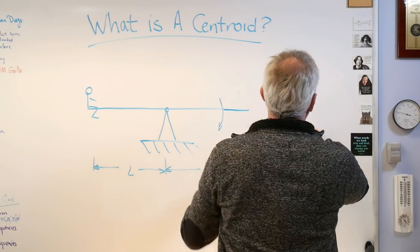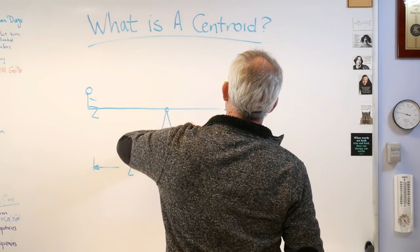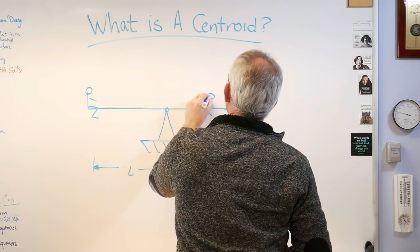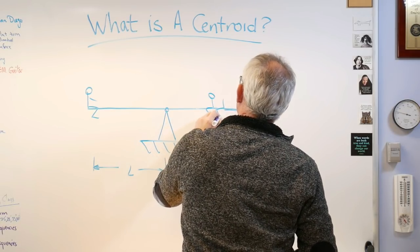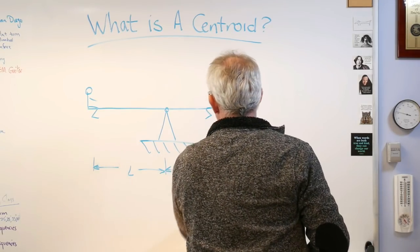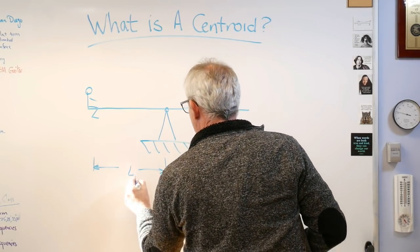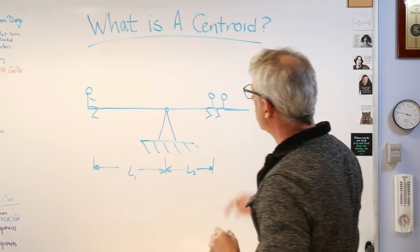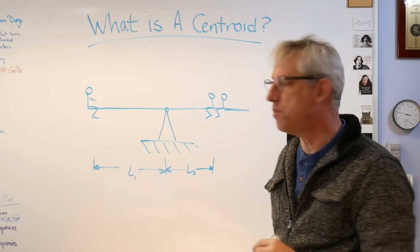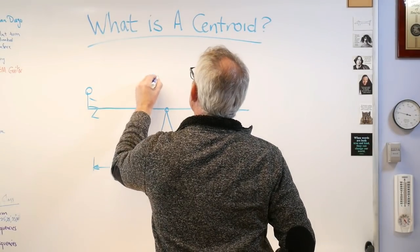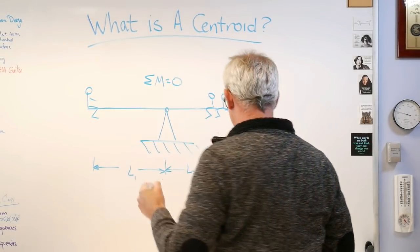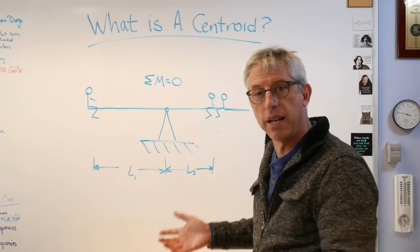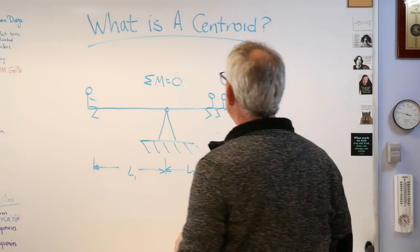Let's put two kids on one side. Instead of equal arm lengths L, we now have L1 and L2 — distances to the centroid of each kid. All of a sudden it balances: the sum of your moments equals zero.